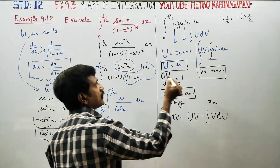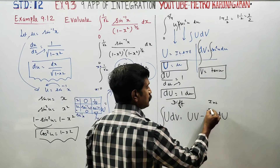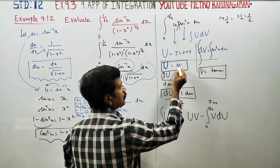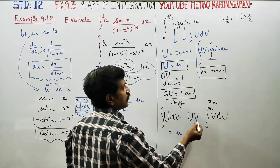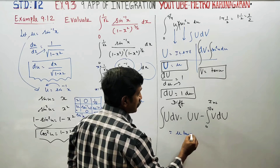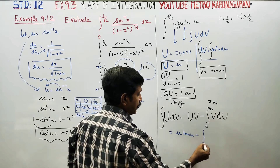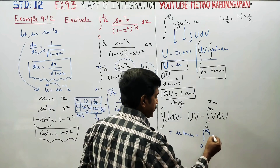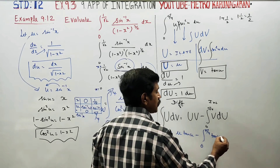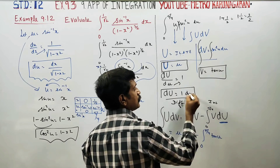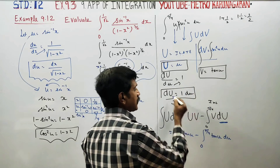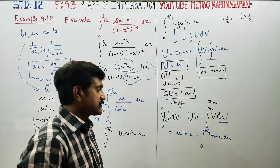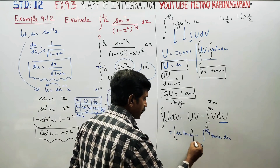With limits 0 to π/4: capital U is the letter u, capital V is tan u. So we have [u · tan u] from 0 to π/4, minus the integral from 0 to π/4 of tan u du.